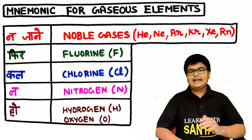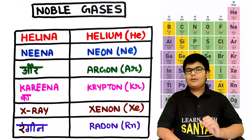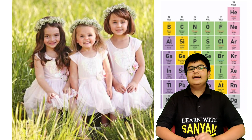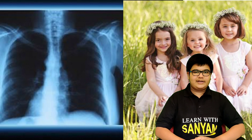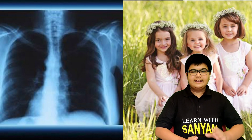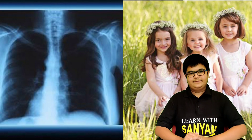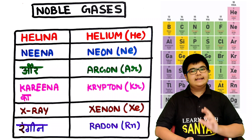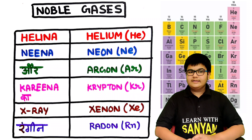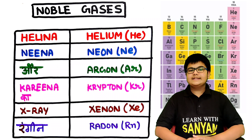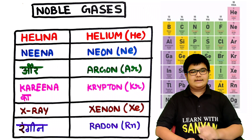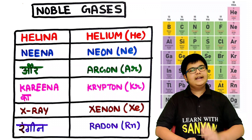Now let's see the mnemonic for noble gases. The mnemonic is: Halina, Nina or Kareena ke x-ray rangin. There are three girls — Halina, Nina, and Kareena — who go to the doctor to get an x-ray, and the doctor says 'Halina, Nina or Kareena ke x-ray rangin.' Halina stands for He (helium), Nina means neon, or means argon, Kareena means krypton, x-ray means xenon (both start with X), and rangin means radon (symbol Rn).